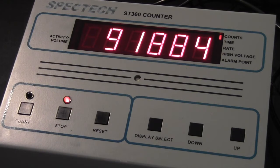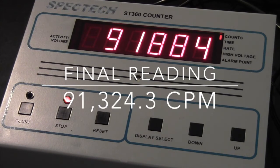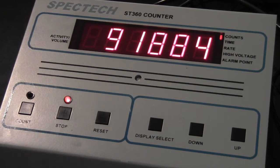We have for this sample 91,884 counts per minute. And we will subtract the background from that. So the actual value is 91,324.3 counts per minute. And that was our demonstration.